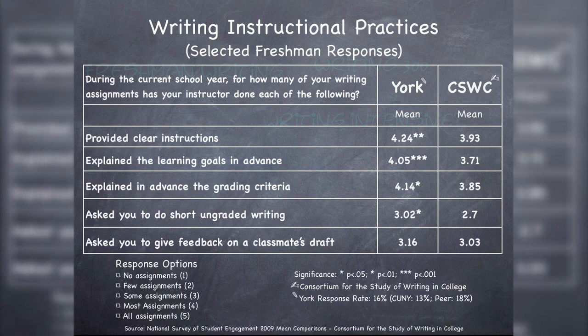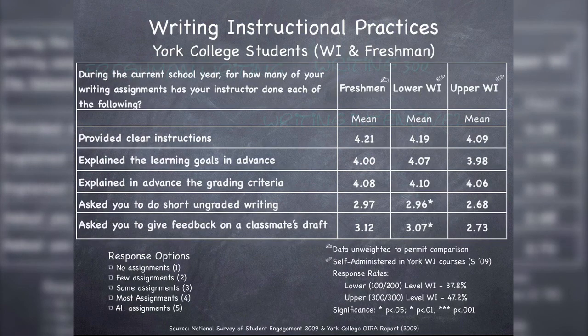As students are reporting, these are best practices and students are reporting we're doing a better job here than the nation or the schools in the consortium as a whole. So let's compare our York freshman responses with the writing-intensive course responses — lower-level WI and upper-level WI — on these same questions. The first column presents mean scores for freshman respondents, which I like to think of as something of a proxy for freshman composition. The second column is students in the lower-level writing-intensive courses, the 100-200 level, and then the third column is the upper-level writing-intensive courses.